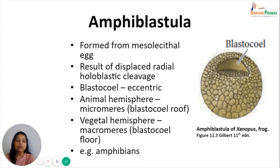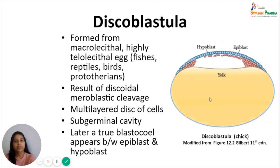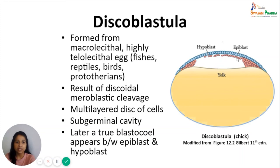The next type is the discoblastula, formed from macrolecithal, highly telolecithal eggs of fishes, reptiles, birds, and prototherian mammals. Discoblastula is formed as a result of discoidal meroblastic cleavage, in which cleavage occurs only in the disc-like cytoplasm at the animal pole while most of the yolk-covered cytoplasm remains undivided. Extensive cleavages in the disc-like cytoplasm form a multi-layered disc of cells at the animal pole only, with a sub-germinal cavity forming beneath, and later a true blastocele appears between the epiblast and the hypoblast.